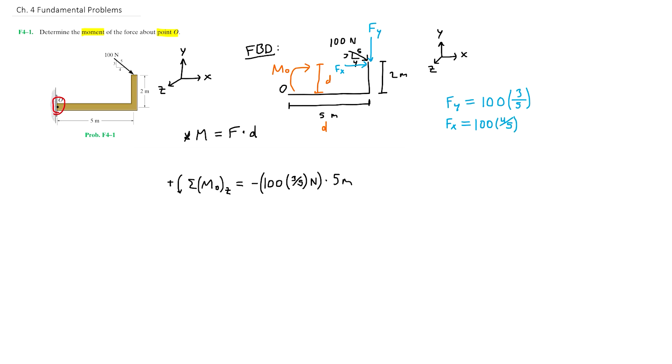This again is another negative moment as it's also in the clockwise direction, whereas our positive direction is counterclockwise. Therefore we have minus our force Fx, 100 times 4 fifths newtons, then times the vertical distance which is now 2 meters.